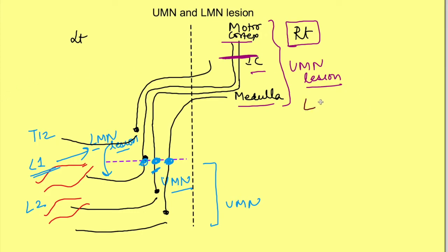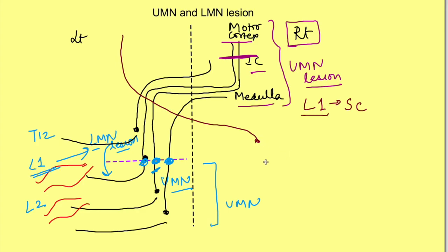We have figured out that the injury is at the level of L1 in the spinal cord. In simple terms: whenever we get both LMN and UMN features, the injury is at the level of the spinal cord, and the level at which LMN features appear is the level of the injury. Now, which side? Since injury in the spinal cord gives same-sided features, and the patient has right-sided weakness, the injury is on the right side of the spinal cord at L1.